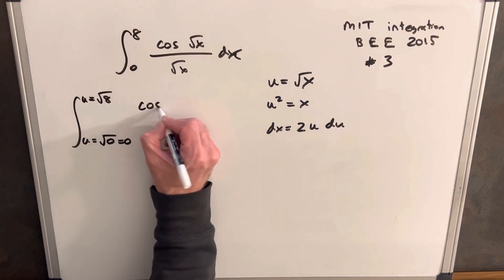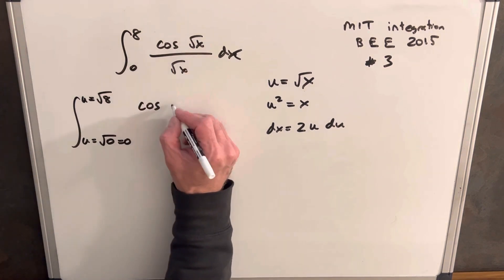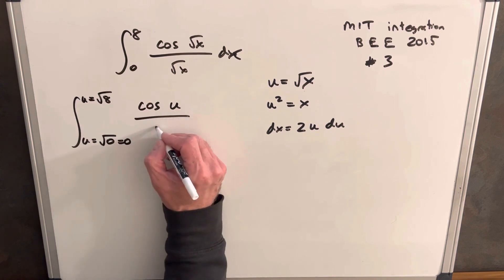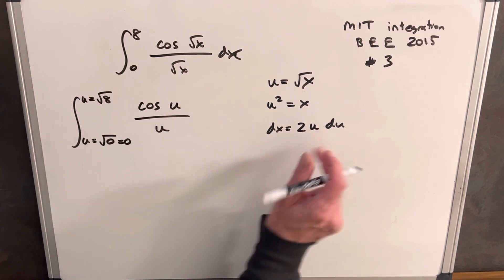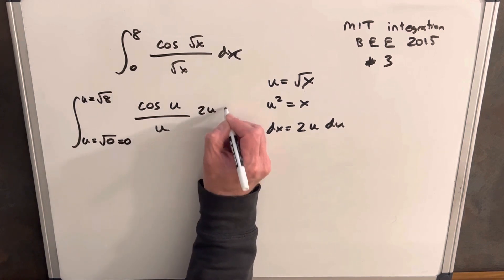And so then this is going to be cosine, square root of x is u, so cosine of u over u. And then let's rewrite our dx as 2u du.